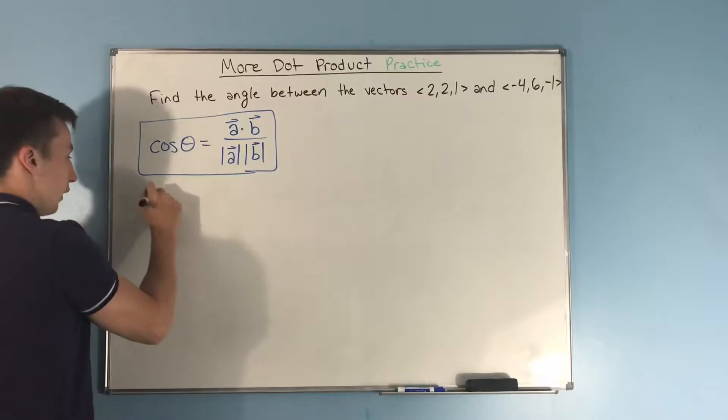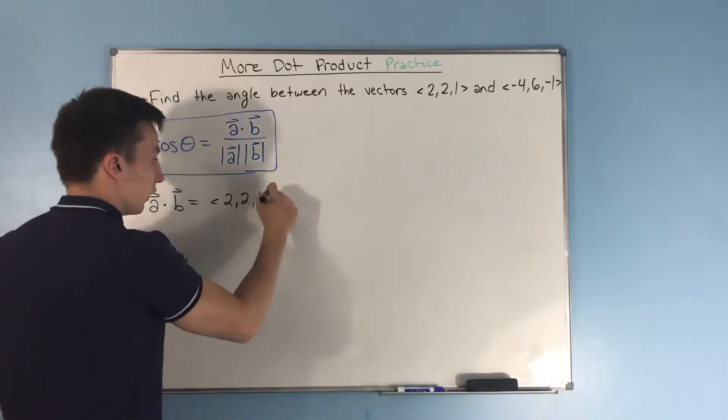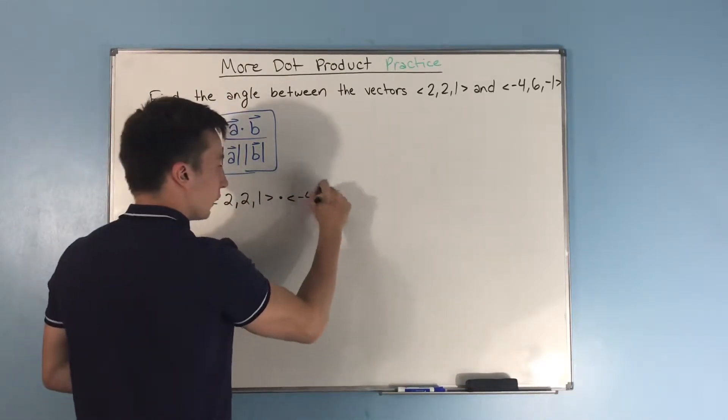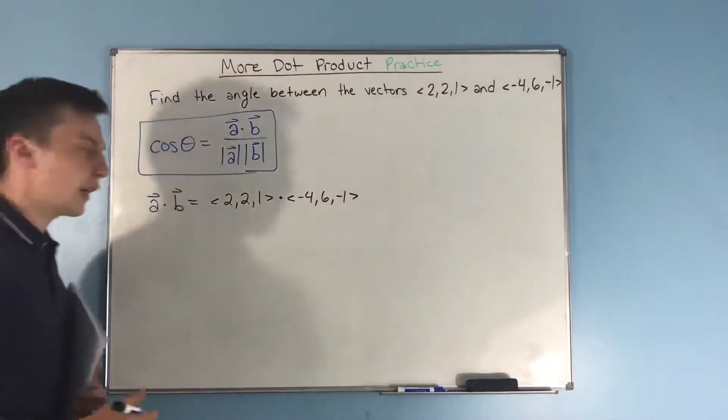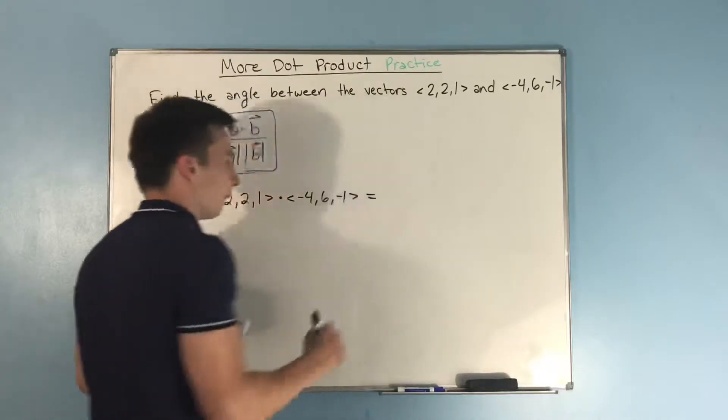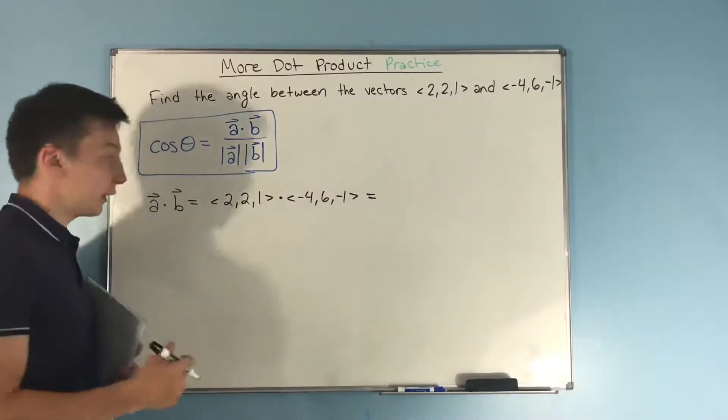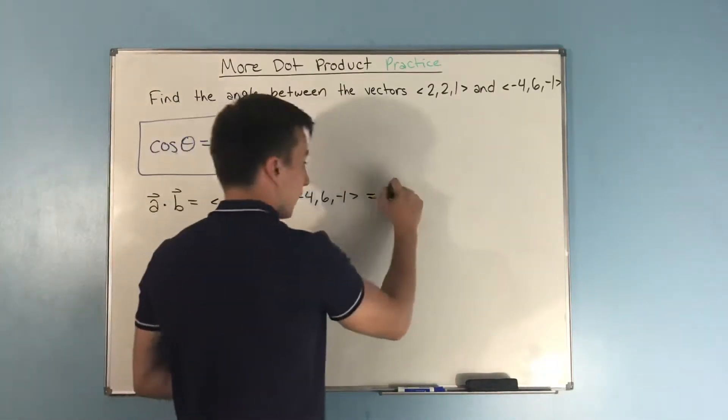Let's do a dot b. That is going to be equal to 2, 2, 1 dot negative 4, 6, negative 1. So let's find the dot product here. We need to multiply our first set of components, and we get 2 times negative 4, that's going to be negative 8.